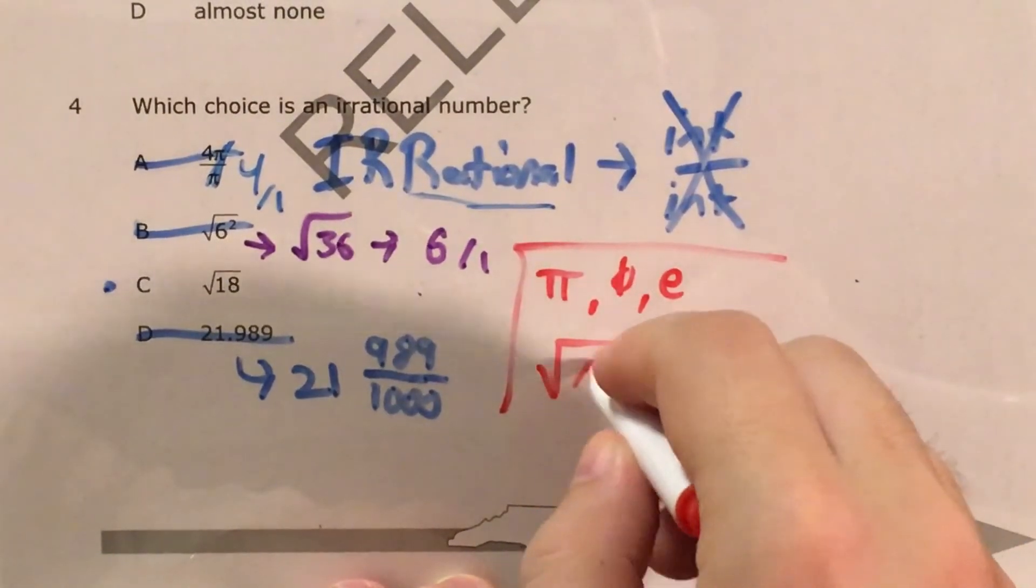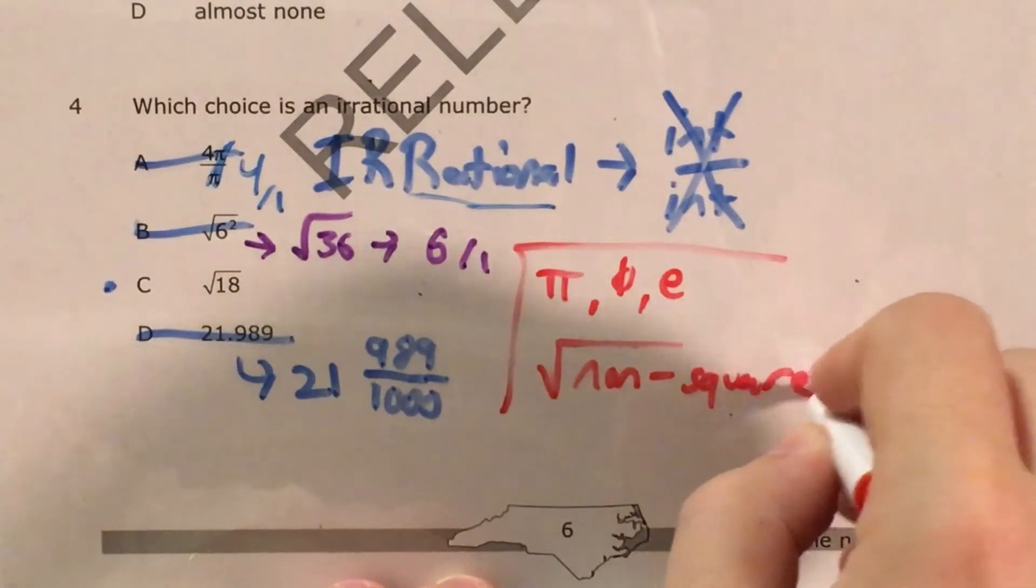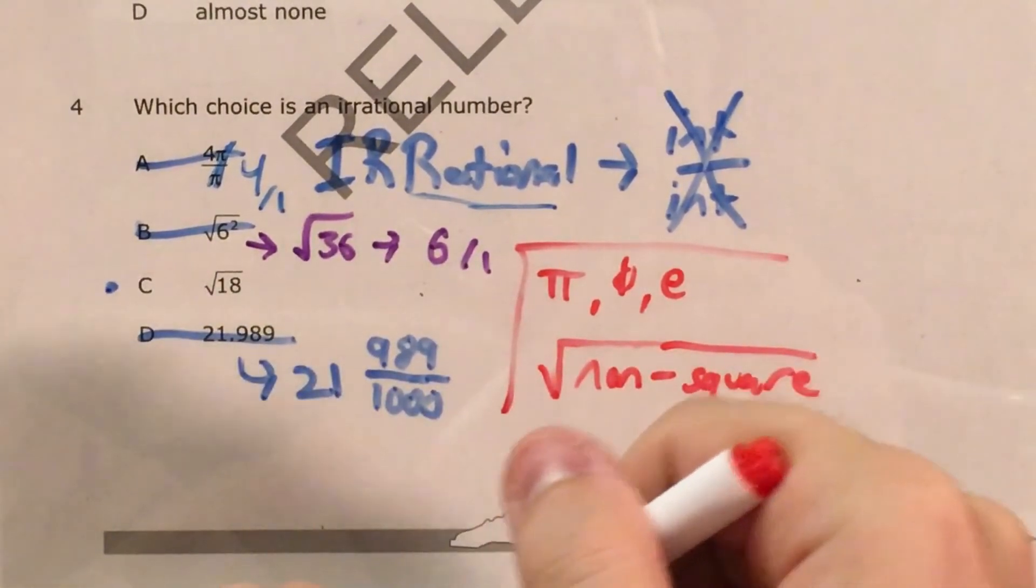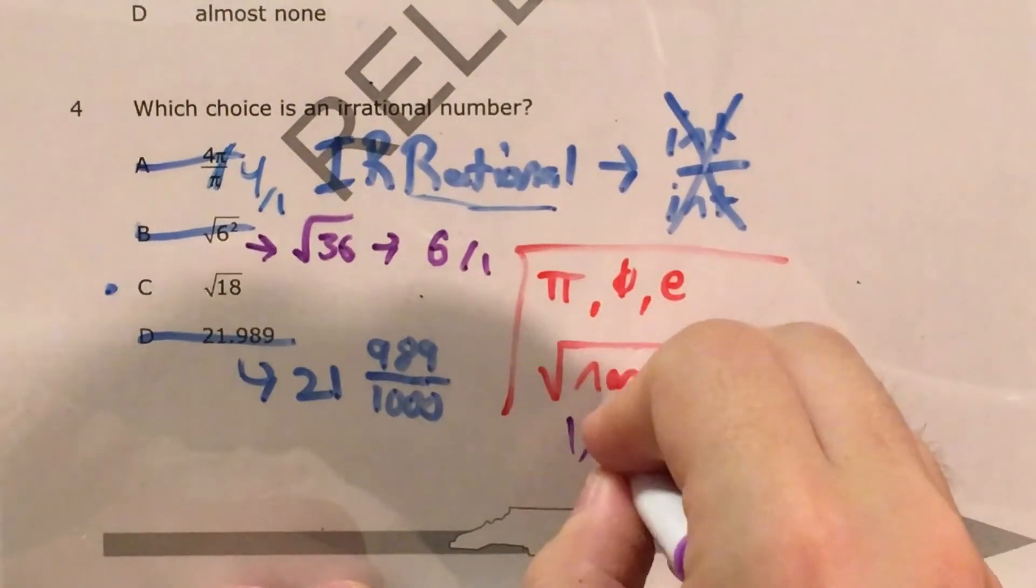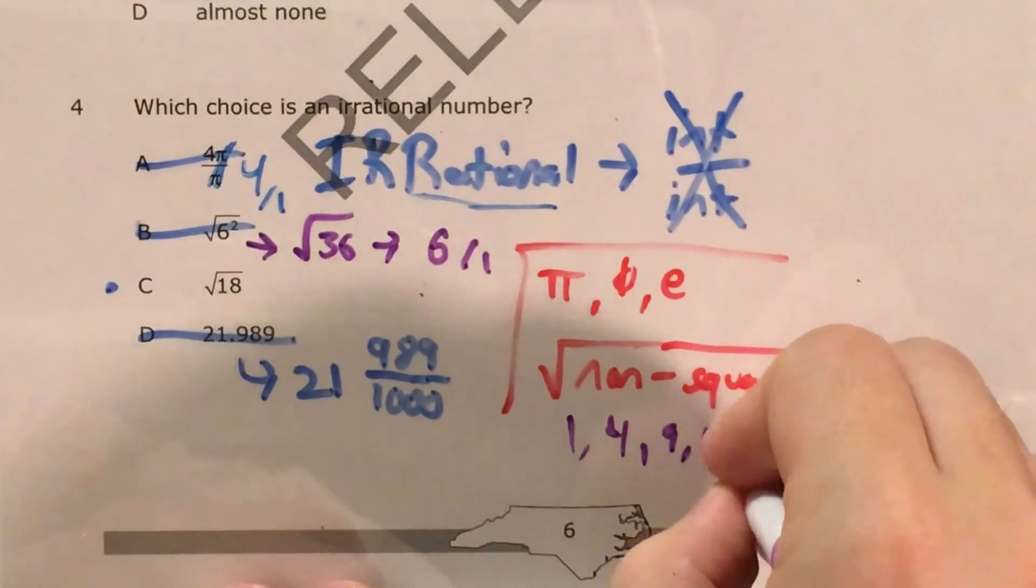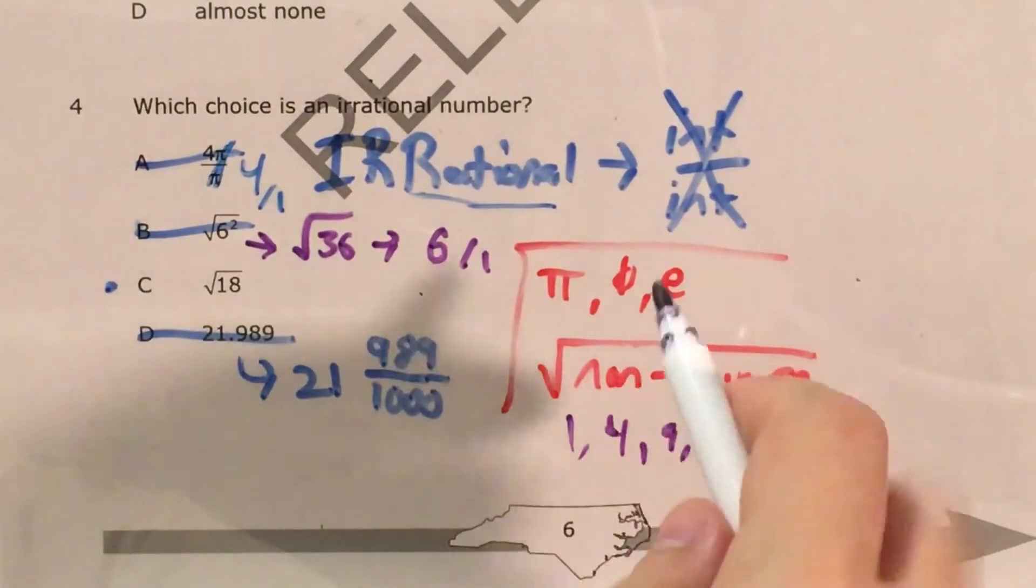If we take the square root of any non-square number, so any number that's not 1, 4, 9, 16, and so on, then we know we're going to get an irrational number.